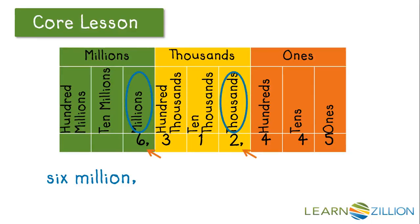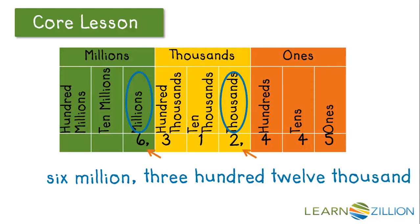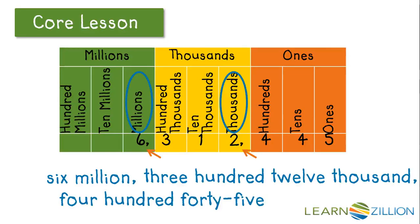So here we have 312 thousand. And then we move to the next period and write 445. When we see the number 12, or numbers between 11 and 19, we always write those as one word. And remember to always insert a hyphen between the tens and units — so 45 would have a hyphen between the forty and the five.